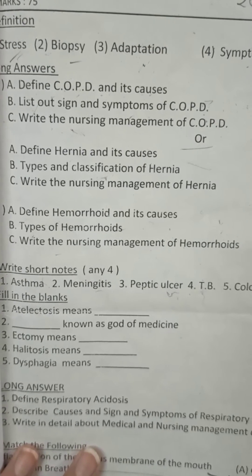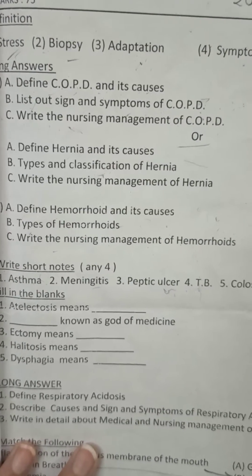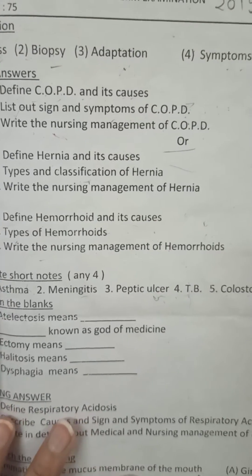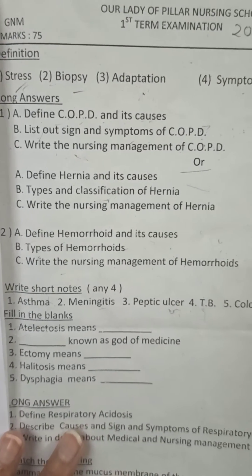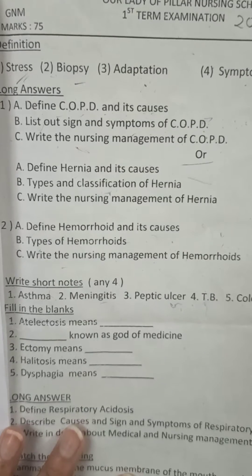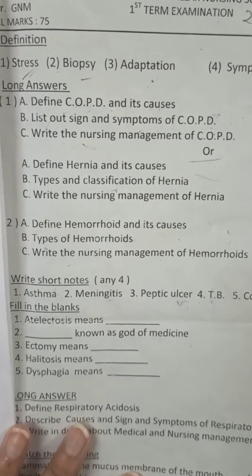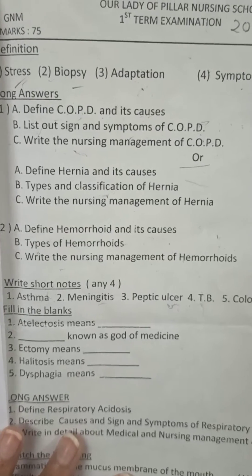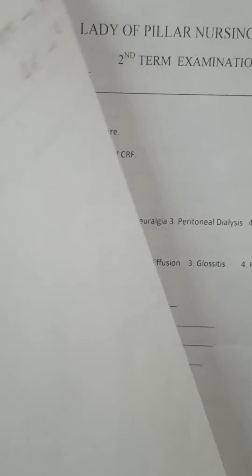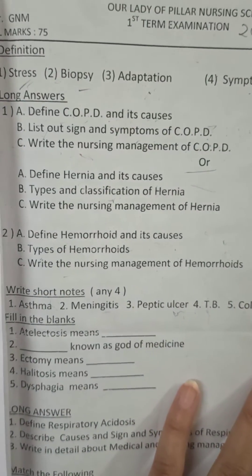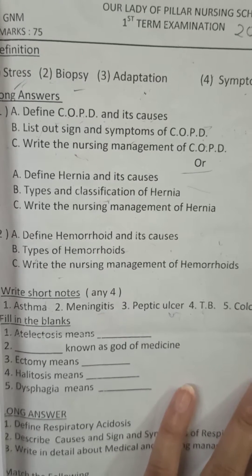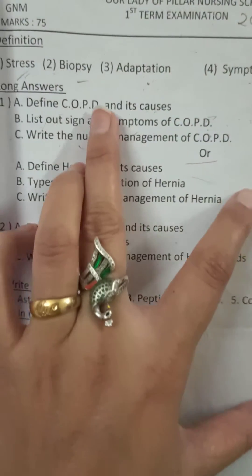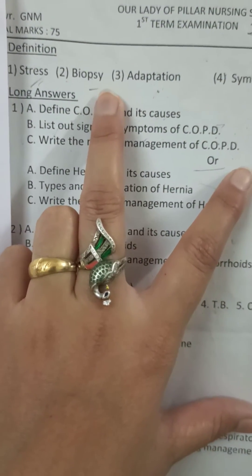First we will start with definitions. The first question is a definition type — definitions are for two marks, five marks, and ten marks. First definition: stress. Stress is a feeling of emotional or physical tension — that's stress.